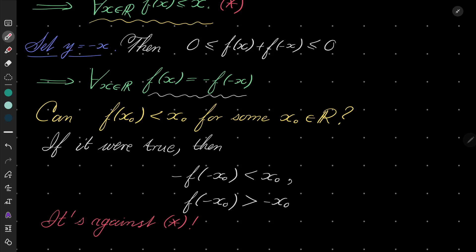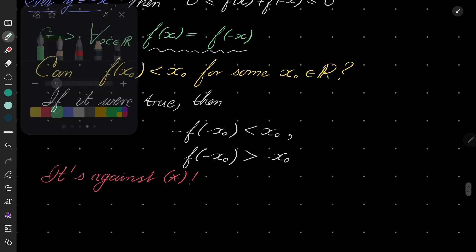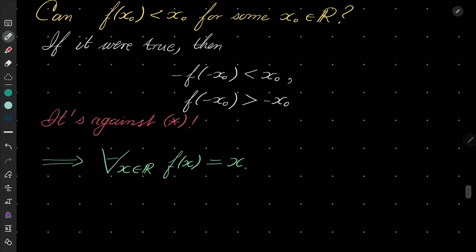And that can mean only one thing. Finally, that means that for every real number x, f(x) must be equal to x. There cannot be strict inequality for any x. And here is our answer.